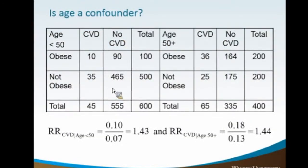Is age a confounder in this relationship? If you break this out for people under age 50 compared to people over age 50 and recalculate the relative risk, the values drop from 1.78 down to 1.43 and 1.44 depending on age group. Basically, if the change goes from a statistically significant relationship to a non-significant one, or reverses direction from positive to negative, those are examples of confounding. If it remains significant but the numbers changed, you might not consider it a true confounder.